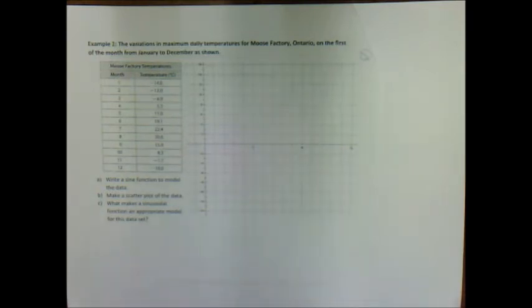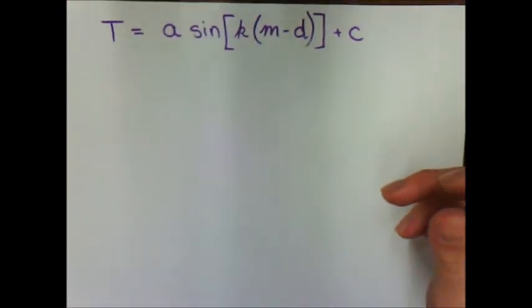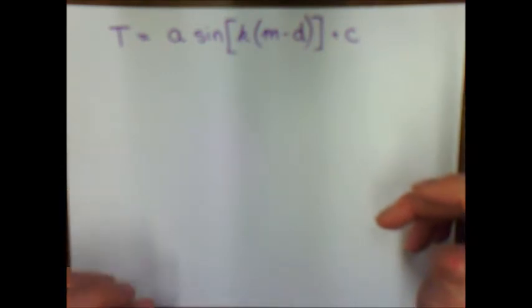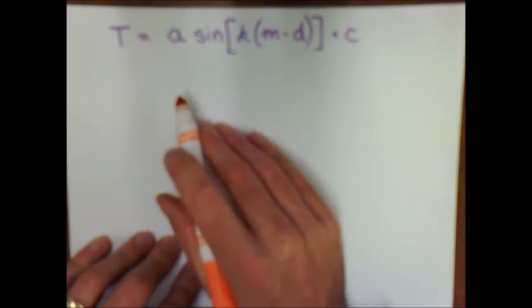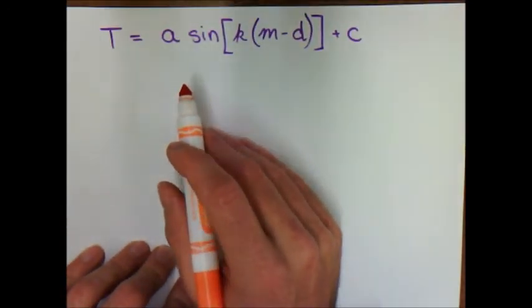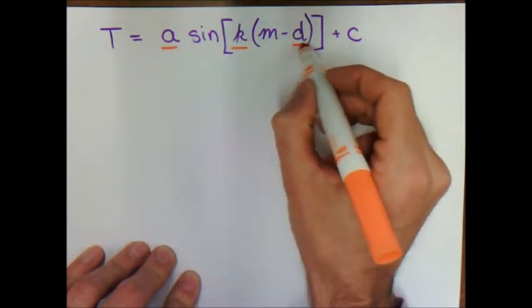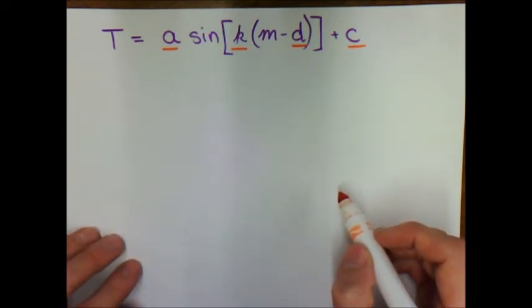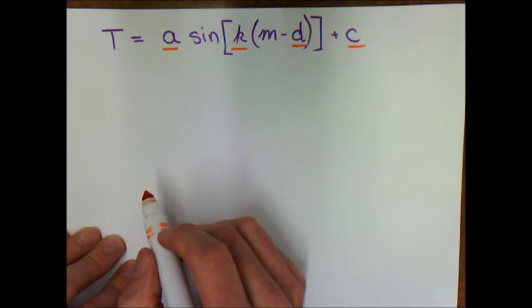Example two involves temperature over the course of a year in Moose Factory, Ontario. It states that the variations in maximum daily temperatures on the first of the month from January to December are shown in a table, and we're going to write a sine function to model the data. A sine function is appropriate because temperature throughout the year repeats itself year to year. The general formula uses constants a, k, d, and c to modify the sine function.